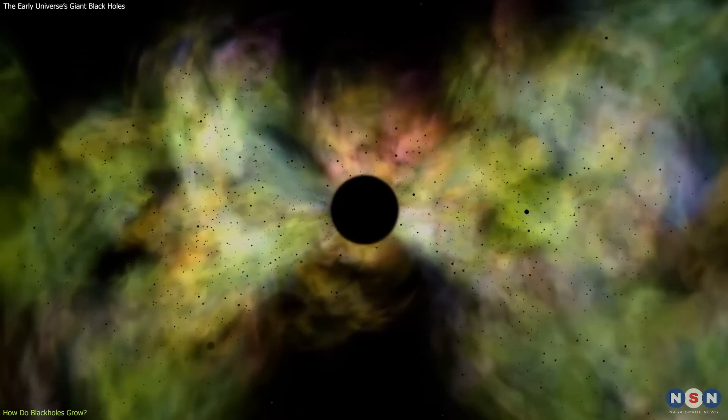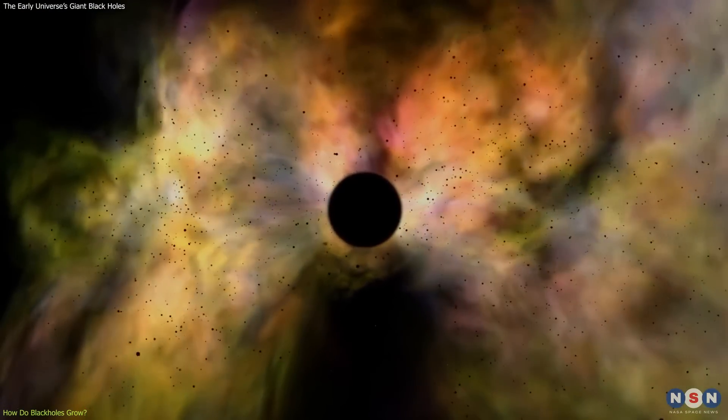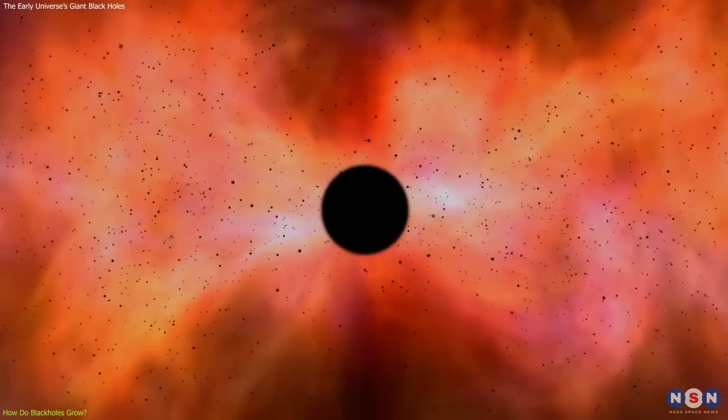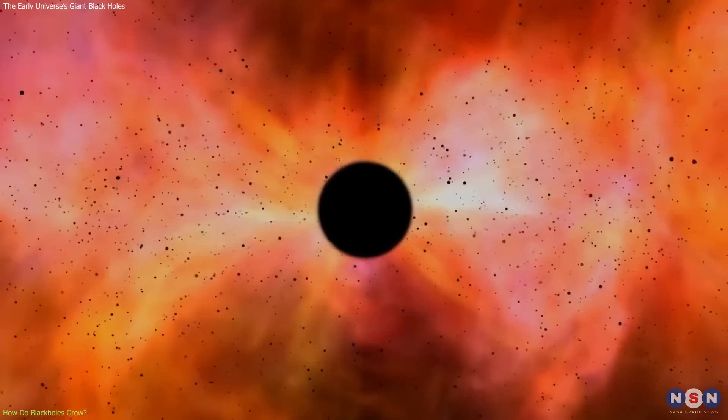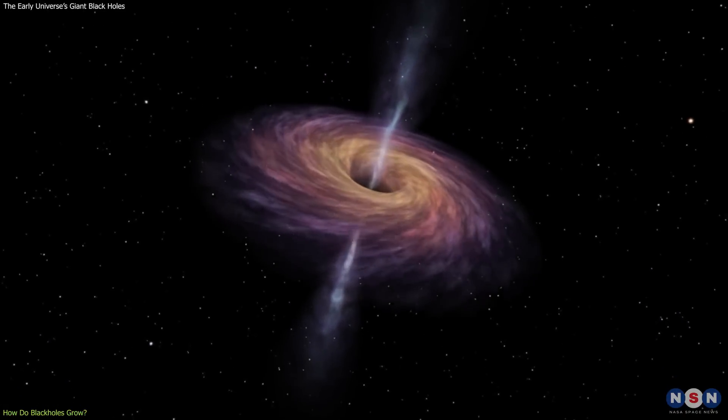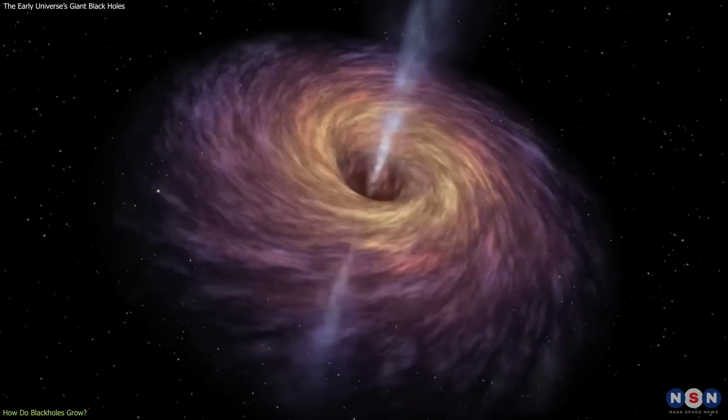So how do black holes grow? Well, according to current theories, they can grow by accreting nearby matter, such as gas, dust, stars, or other black holes. When matter falls into a black hole, it forms a disk around it called an accretion disk.